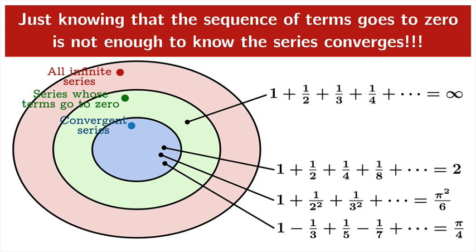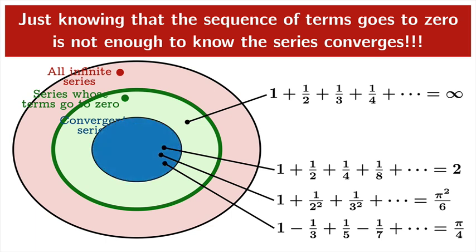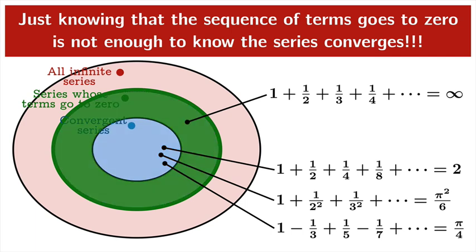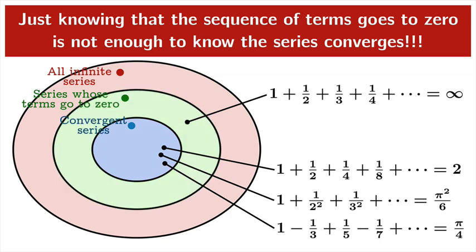A big takeaway from this example is that just knowing the sequence of terms goes to 0 is not enough to conclude the series converges. You can never use the fact alone that the sequence of terms goes to 0 to claim convergence. To be convergent, a series must live inside the inner set, and it's totally possible to live in the outer ring — where terms go to 0 — without being convergent. Knowing terms go to 0 by itself is just not enough information to prove convergence.